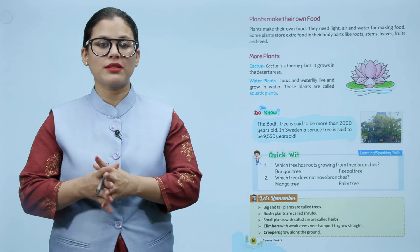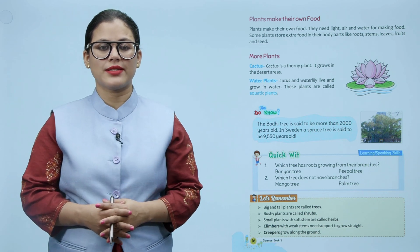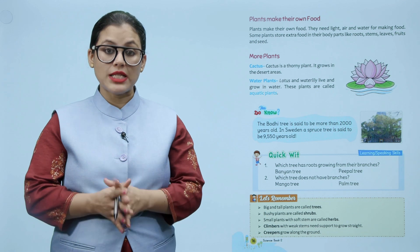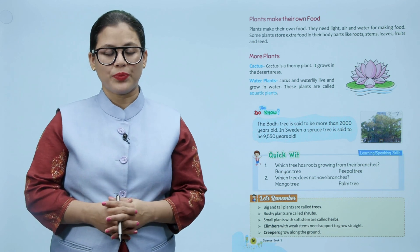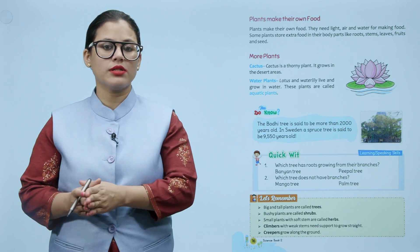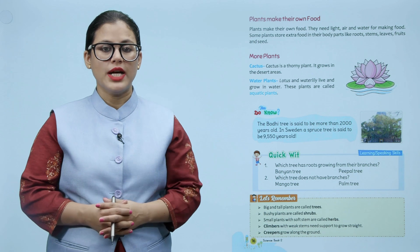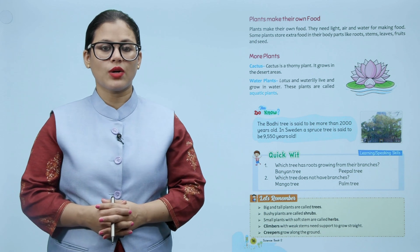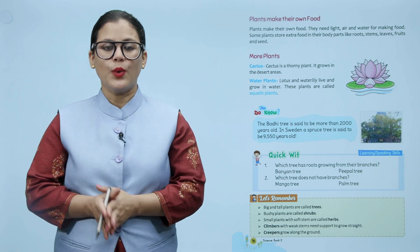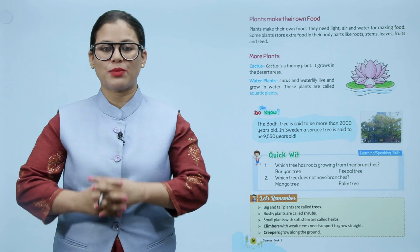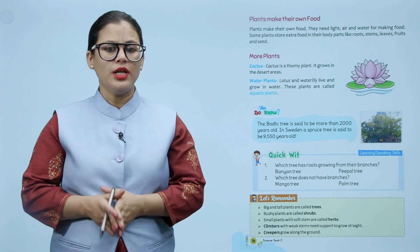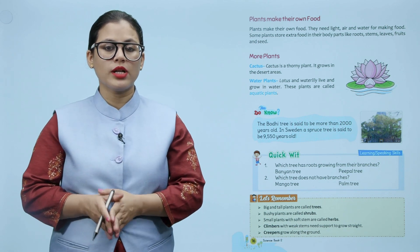Cactus is a thorny plant. It grows in desert areas. Cactus ek kaante daar plant hota hai jo generally desert mein hota hai. Water plants: Lotus and water lily live and grow in water. These plants are called aquatic plants. Jo plants paani mein ugti hain, unhe aquatic plants kaha jaata hai.